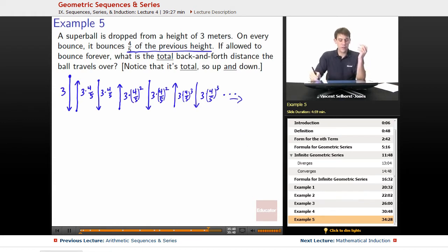So we want to figure out the total back and forth distance the ball travels over. So notice what we've got here is we've got ups and we've got downs. So I'm going to calculate the ups first. How much is from this up, plus this up, plus this up, going on forever and ever? So notice what that means we're dealing with is an infinite sum, because we're saying if it were to continue bouncing forever, what would be the amount of distance it would travel over?